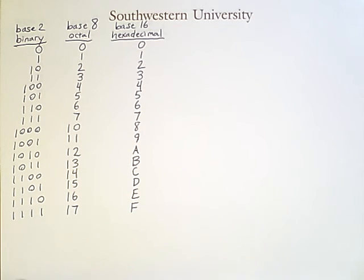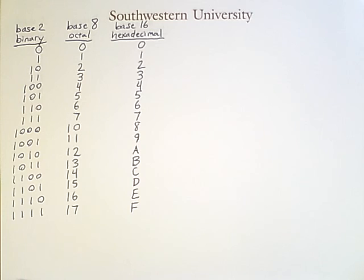The previous modules indicated how to convert between decimal, base 10 numbers, and numbers with any arbitrary base. Now binary, base 2, is particularly important to computer science, but there are two other number systems which are also important.